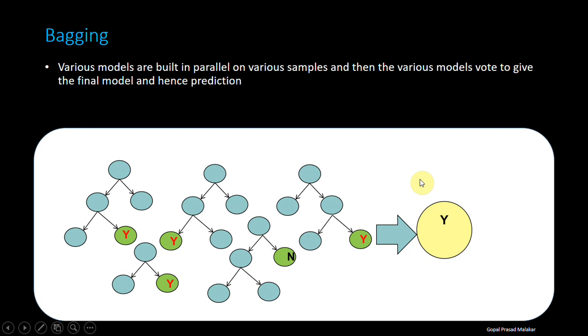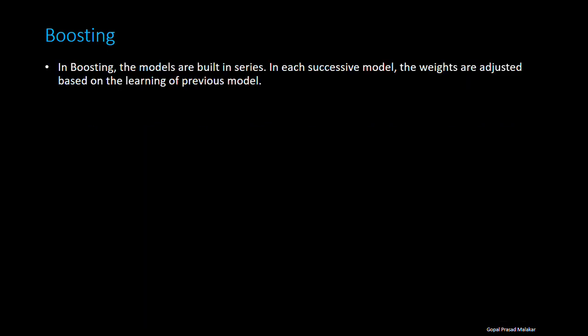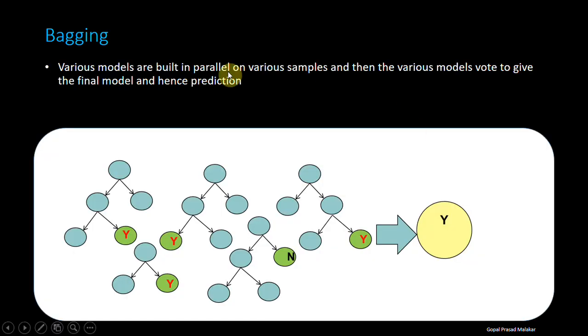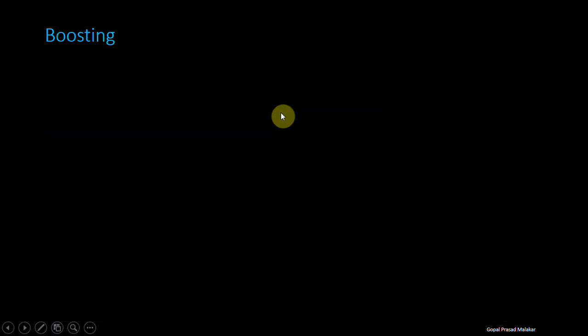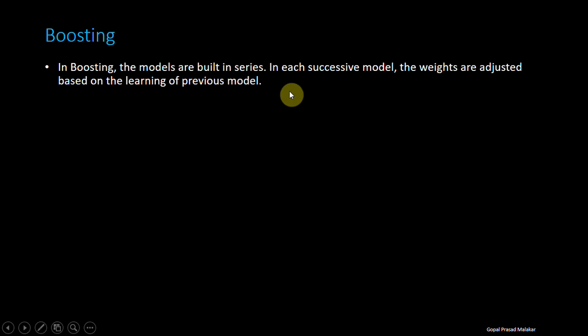Now look at boosting. In boosting, models are built in series. In bagging, models are built in parallel; in boosting, models are built in series. In each consecutive model, the weights are adjusted based on the learning of previous models. Let's take a look at what you do.